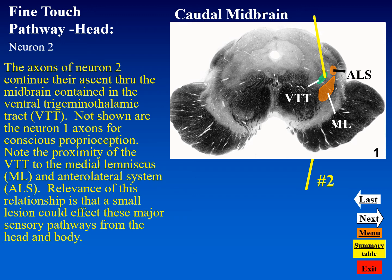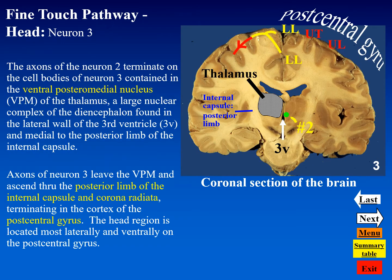We should keep that in mind for later discussions involving lesions. The conscious proprioceptive pathway from the head region is not illustrated here for simplicity. The key point is that the neuron one cell body for proprioception from the head is not in the semilunar ganglion but in the mesencephalic nucleus of five, making it essentially a two-neuron pathway to reach conscious levels in the diencephalon.